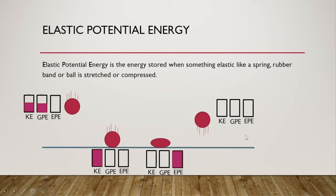And then lastly, over here, we see that the ball is moving upwards again. We have the movement lines, so we're going to have some kinetic energy, and then we have some height, so we're going to have some gravitational energy. We notice that the ball here is lower than it was at the start, so our GPE is going to be less relative to where it was in the beginning.